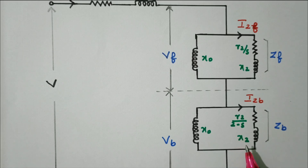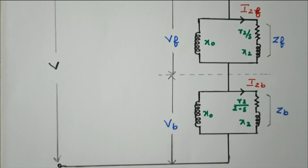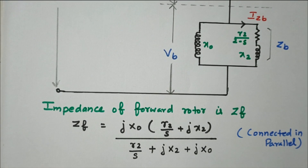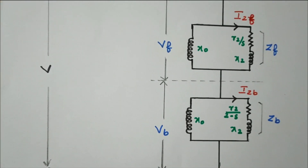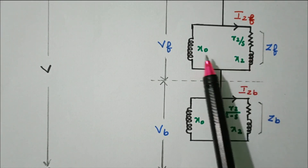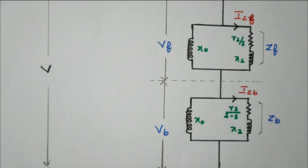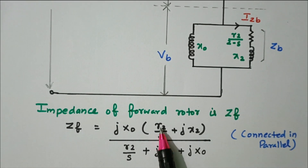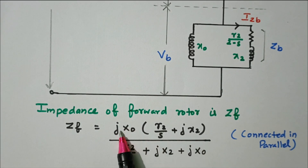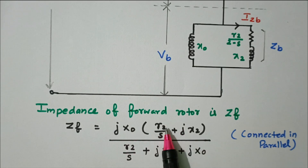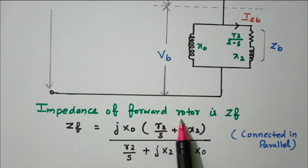From the equivalent circuit we can find zf and zb — the impedance of the forward and backward rotors. For the forward rotor, r2/s and x2 are connected in series, and that combination is in parallel with x0. So zf equals (jx0) in parallel with (r2/s plus jx2), which gives zf = jx0 × (r2/s + jx2) divided by (r2/s + jx2 + jx0).